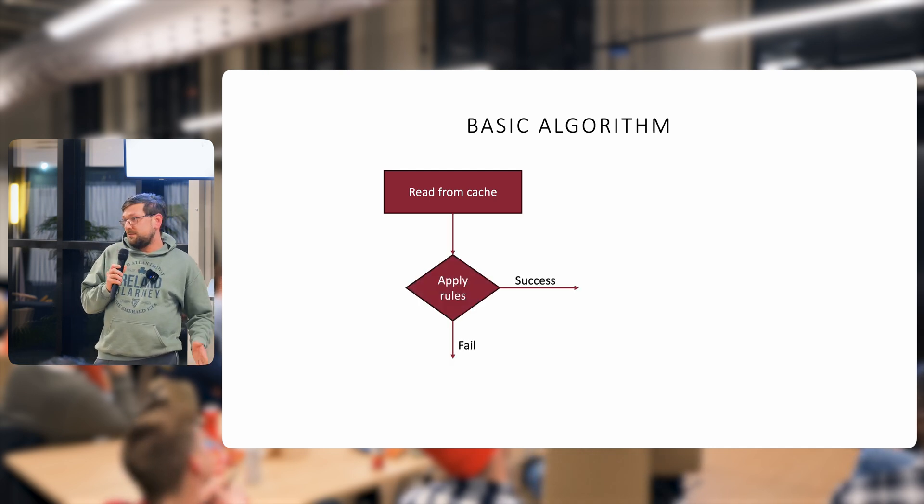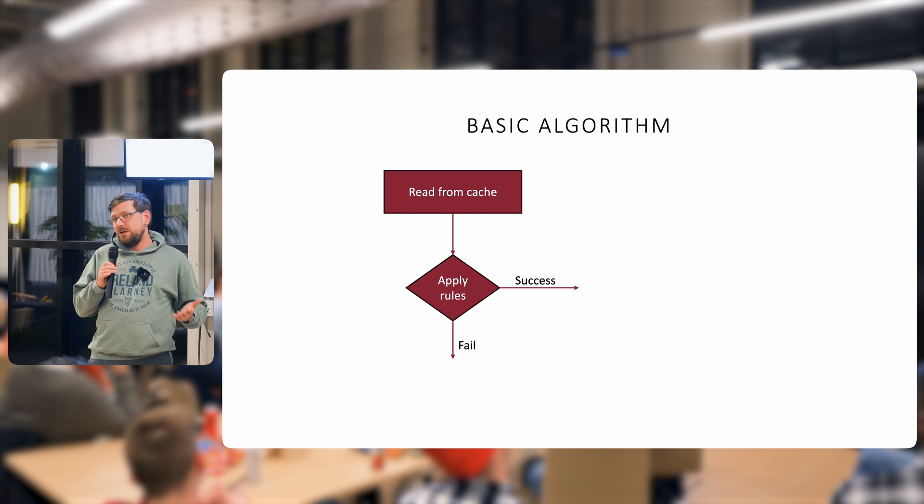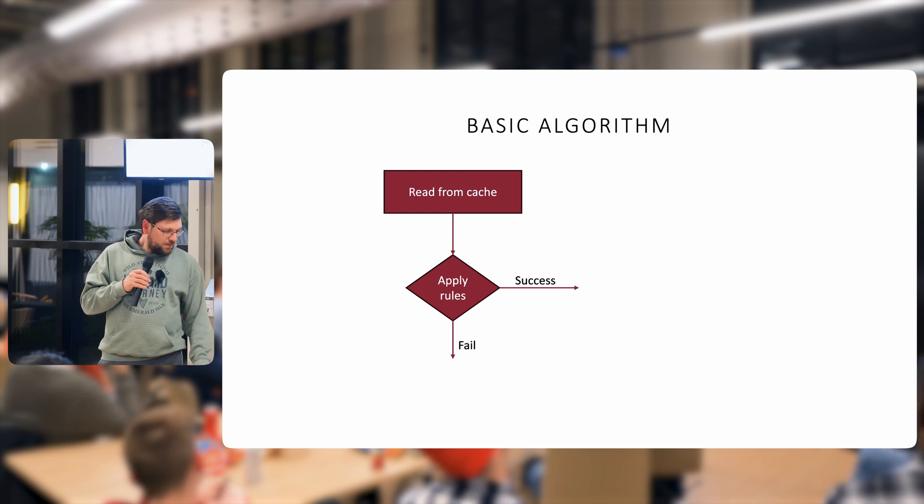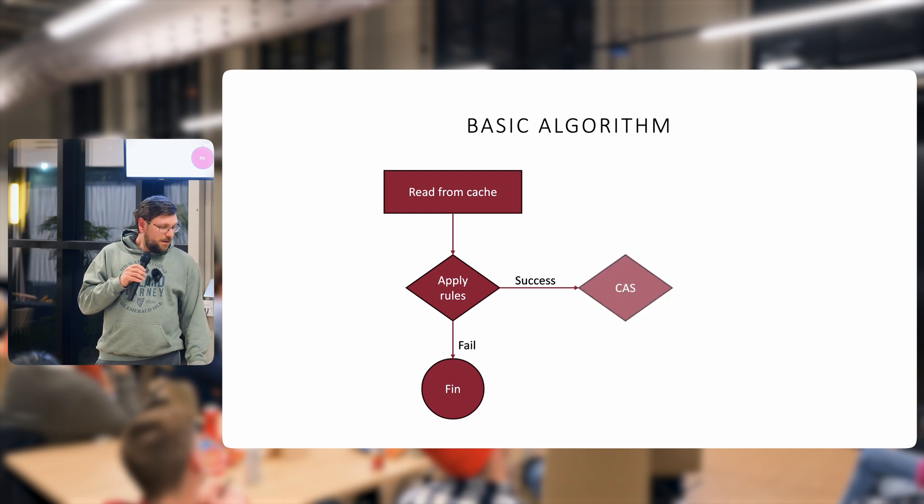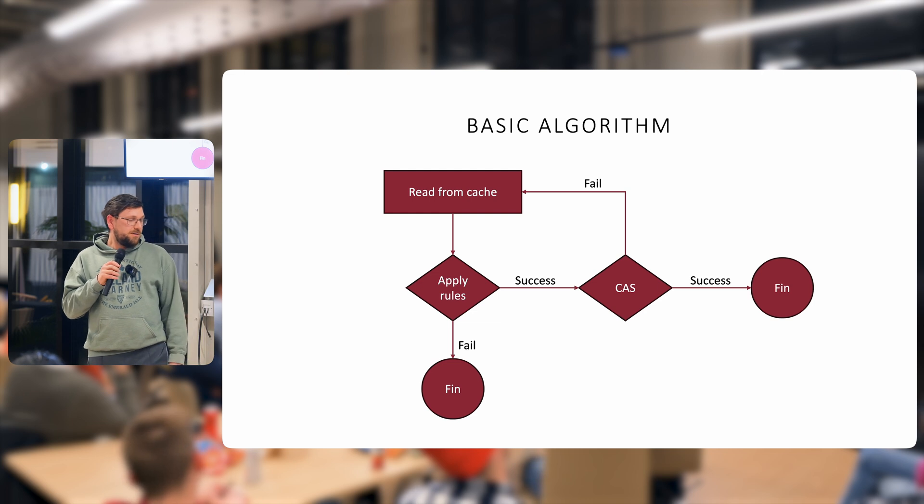You apply any rules, like say version is less than or equal to the current version. If we fail, we bail out of our algorithm and go do something else. If it's successful, we do a compare and swap on our cache. And if we fail, we retry. We go back and we say okay now is it what we expect?